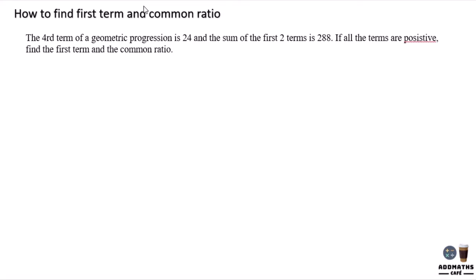How to find the first term and the common ratio? You are required to find A and R. So the question says the fourth term - I'm sorry this is a typo - the fourth term of a GP.